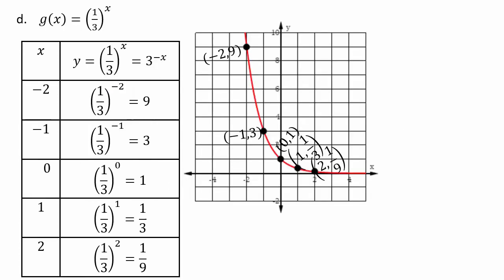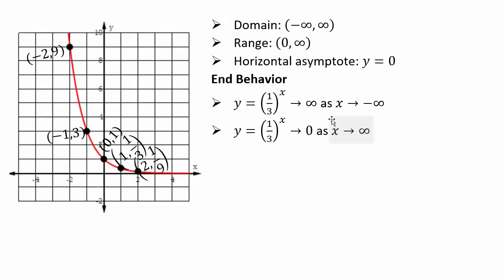Let's do (1/3)^x together. At x = −2 you have 9; x = −1 gives 3; x = 0 gives 1; x = 1 gives 1/3; x = 2 gives 1/9. Domain: (−∞, ∞). Range: (0, ∞). Horizontal asymptote: y = 0. End behavior: as x → −∞ the function shoots to positive infinity; as x → ∞ the y-coordinate goes to 0, confirming y = 0 as the horizontal asymptote.